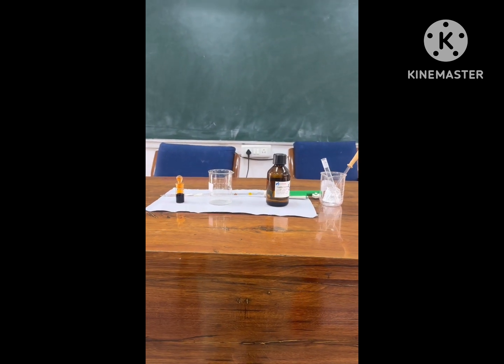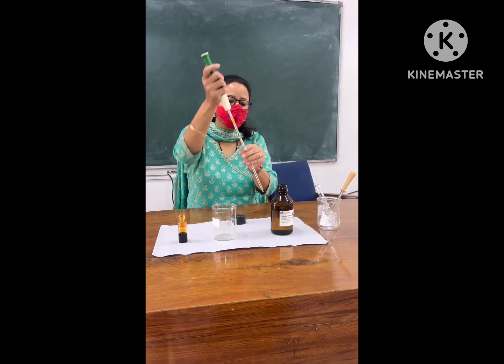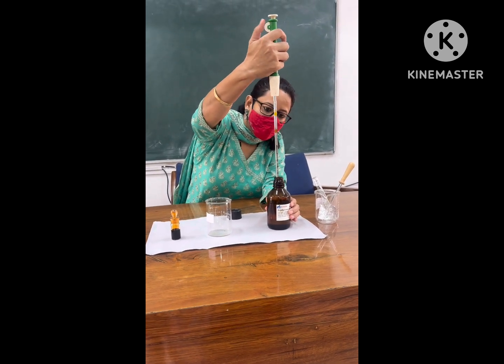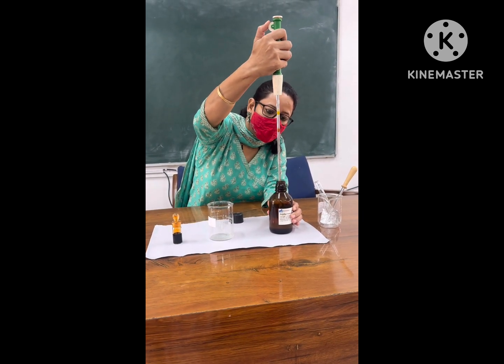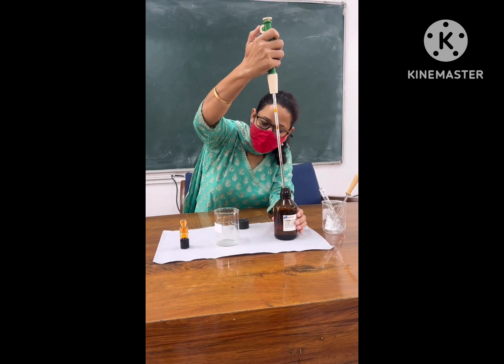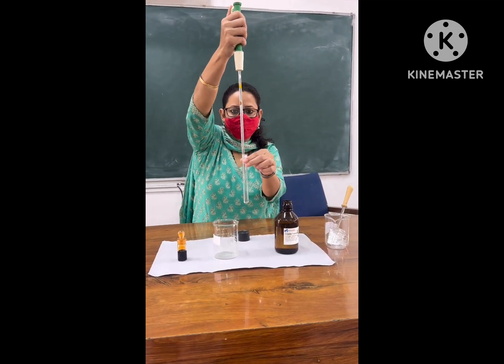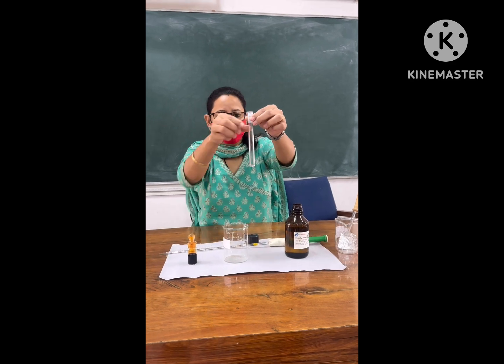Here I have taken 0.5 ml of dimethyl maleate using a pipette, and this dimethyl maleate is poured into a test tube. 0.5 ml of dimethyl maleate is poured into a test tube.